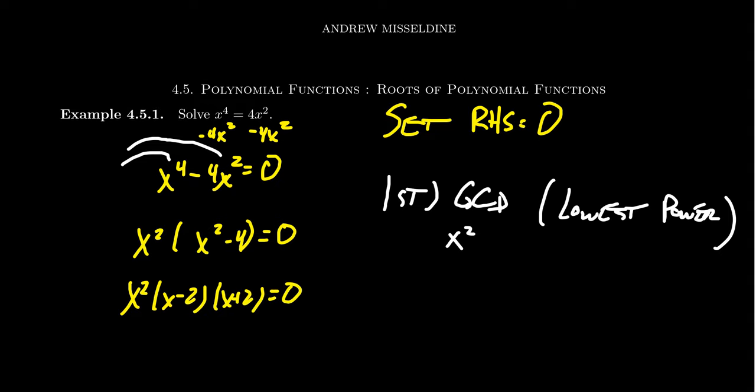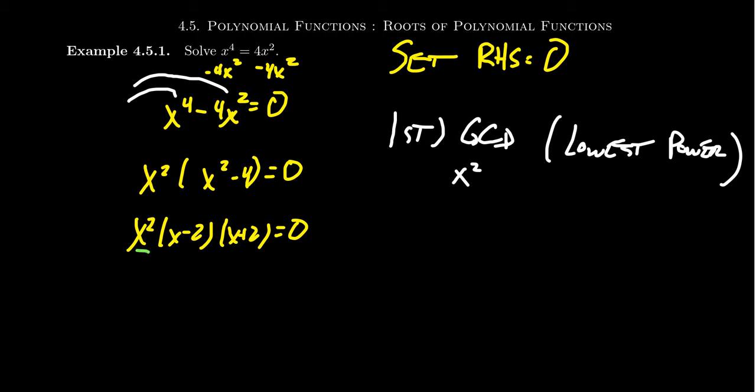Then by the zero product property, we can set each and every one of these factors equal to 0. Setting the first factor equal to 0, x squared would give us x equals 0. Setting the second factor equal to 0, x minus 2, we'd get x is equal to 2. And setting the third factor equal to 0, x plus 2 equals 0, that is, x is negative 2. So we have three roots to this polynomial. Notice that x squared is a repeated root. Its multiplicity would be 2. The multiplicity of the other ones is 1. The solutions to this equation are 0, 2, and negative 2.